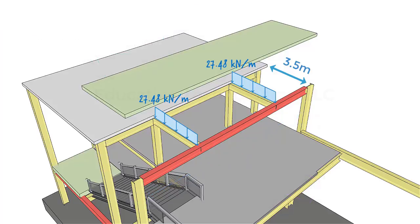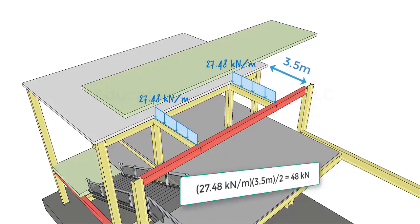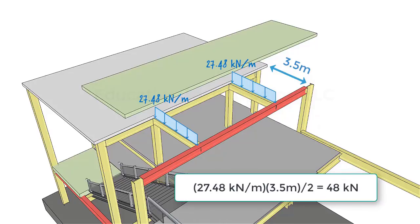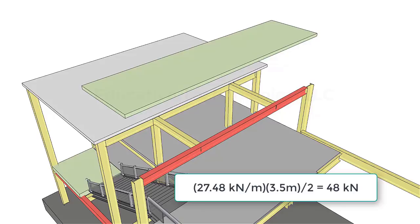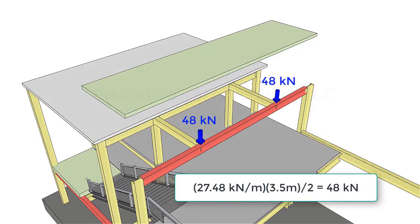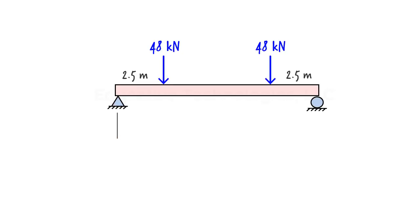If we multiply the magnitude of each distributed load by the length of the transversal beam, we get the total load per beam. Dividing the total load by 2 gives the magnitude of the concentrated load being exerted on the red beam, which equals 48 kilonewtons. Assuming the beam is simply supported, we are now ready to analyze it and write its shear and moment equations.